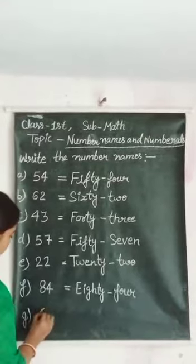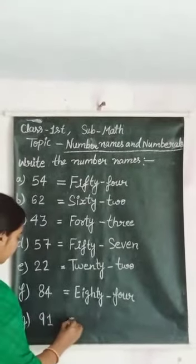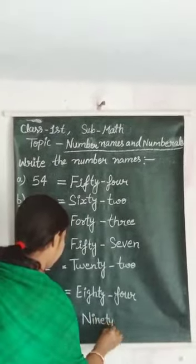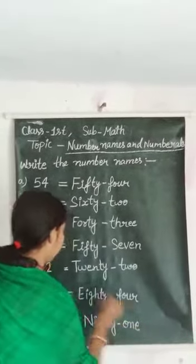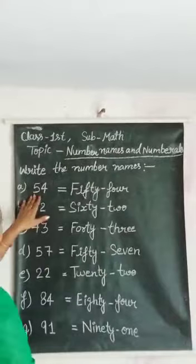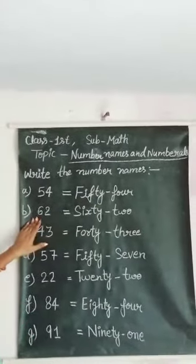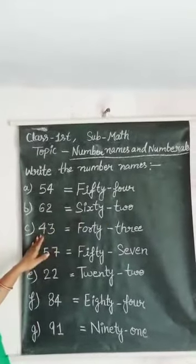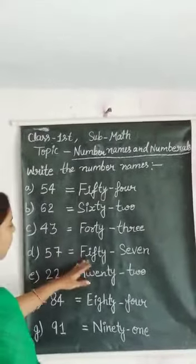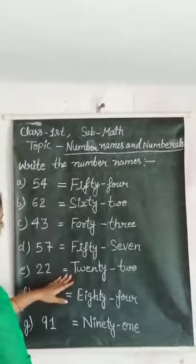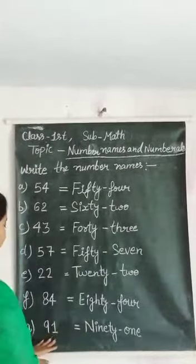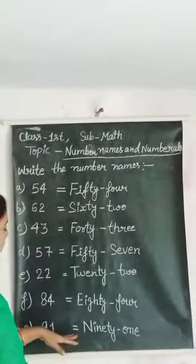Next, numeral is 94. Number name is NINETY-FOUR. Number name is 62, numeral is 84, equals 84. Next numeral is 91, number name is 1.